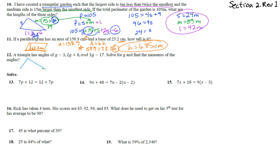Number 12: a triangle with angles g minus 3, 2g plus 8, and 3g minus 17. The angles of a triangle add up to 180 degrees, so our equation is (g minus 3) plus (2g plus 8) plus (3g minus 17) equals 180.